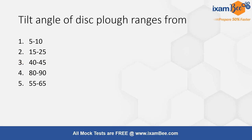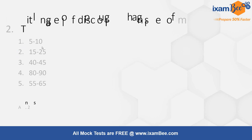The next question is: the tilt angle of disc plough ranges from — options are 5 to 10 degrees, 15 to 25 degrees, 40 to 45 degrees, 80 to 90 degrees, or 55 to 65 degrees. The tilt angle is 15 to 25 degrees, which is the right answer.